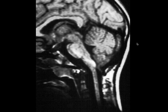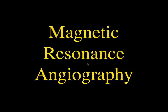Here's an example. We can see CSF flow anterior to the pons that's at an oblique angle. Because the readout gradient is up and down, it's actually displacing the signal intensity that should be the CSF into the brain stem itself. So you can occasionally see that.